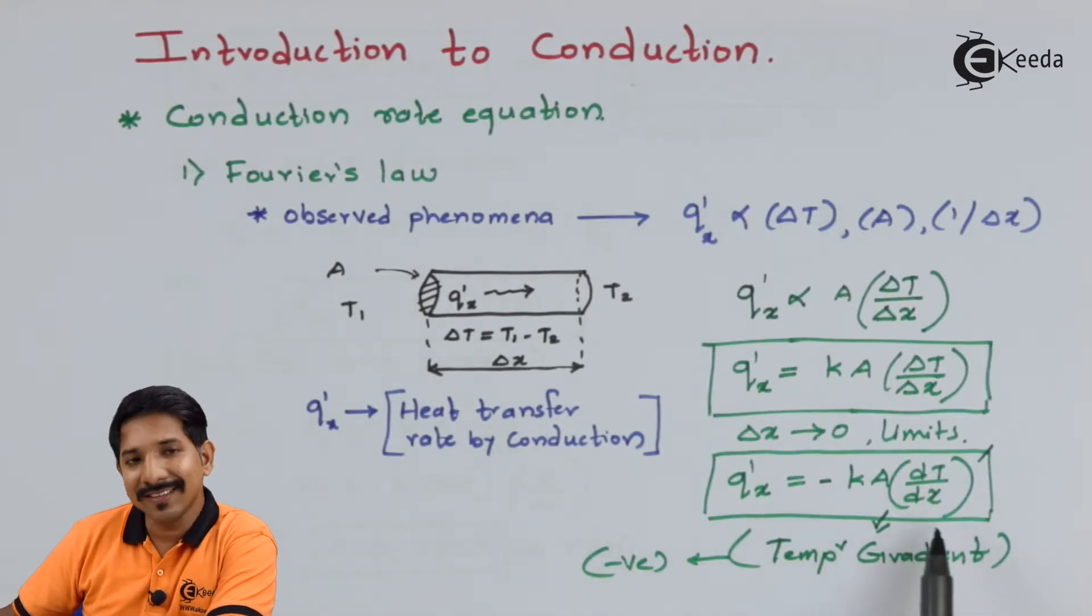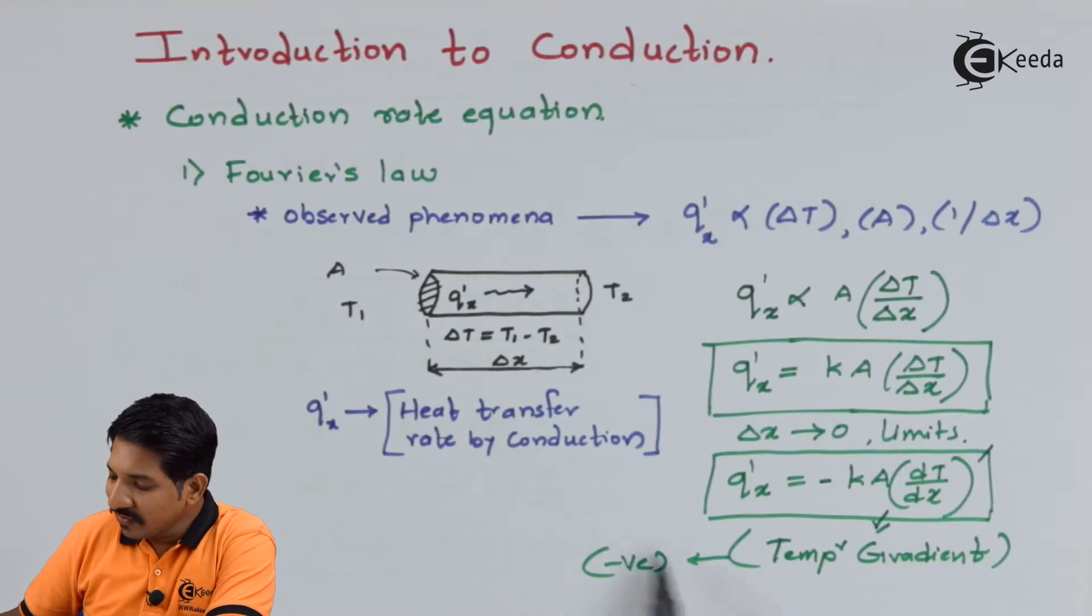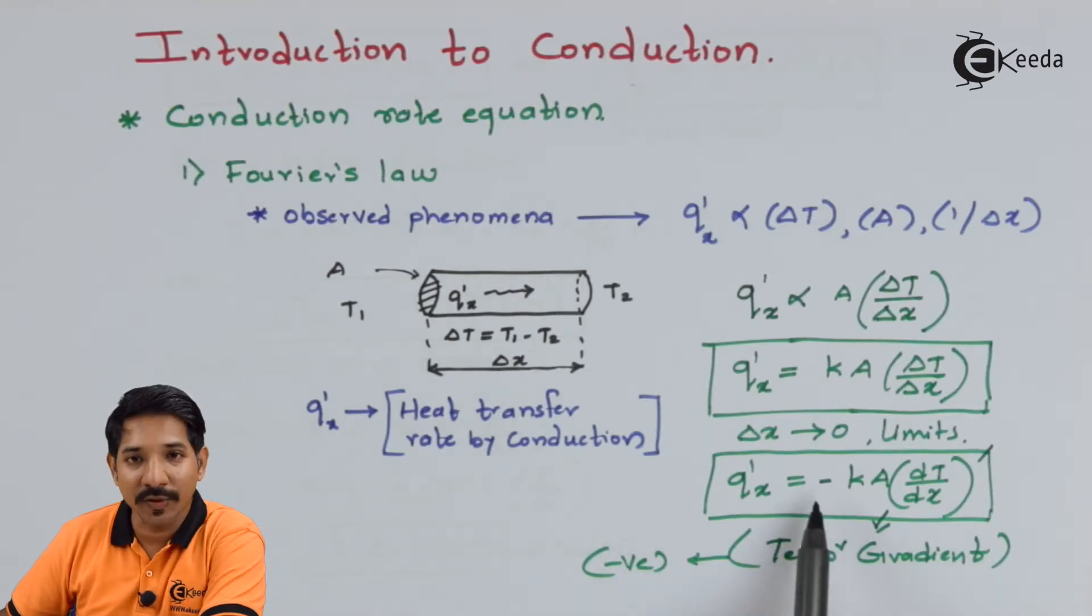So dT by dx is inherently negative. So to cope up with this negative sign we have to introduce this negative sign over here.